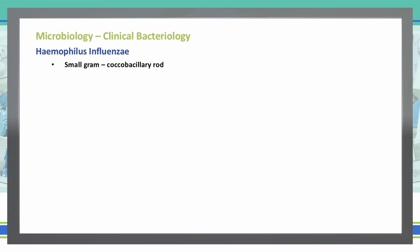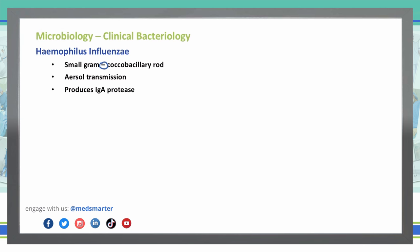Haemophilus influenzae is a very small gram-negative coccobacillary rod. It's transmitted via aerosol transmission — coming out of the mouth in an aerosolized form — and it also produces IgA protease. Haemophilus influenzae is the HI in the SHIN bacteria mnemonic for organisms that produce IgA protease, which helps increase their ability to colonize the mucosal membranes.